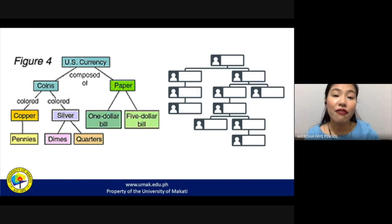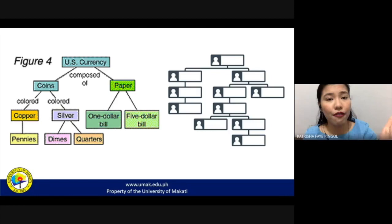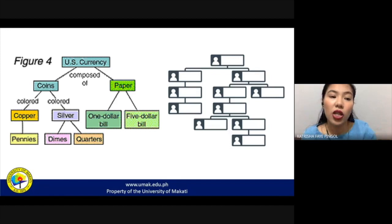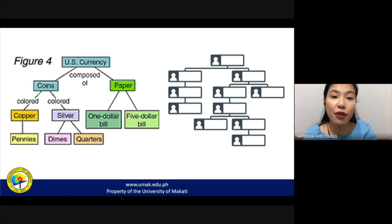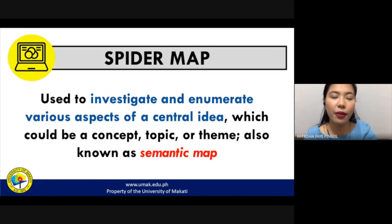For example, U.S. currency is the big umbrella idea. It is composed of coins and paper. For coins, there are colored coins — copper and silver. Copper includes pennies; silver includes dimes and quarters. For paper currency, you have the $1 bill and the $5 bill. You can do the same for Philippine currency, identifying what types of coins and paper currency we have.